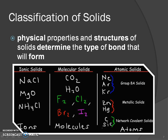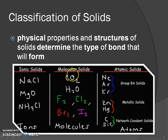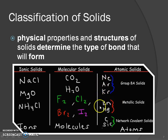Most of this you already know. You know how to classify solids based on their physical properties and structures, then determine the bond type and what will form. Ionic solids are a metal with a nonmetal, or a polyatomic ion with a nonmetal. Molecular solids are nonmetals combined, or your diatomic molecules. Atomic solids are your atoms, and metallic solids are your metals.